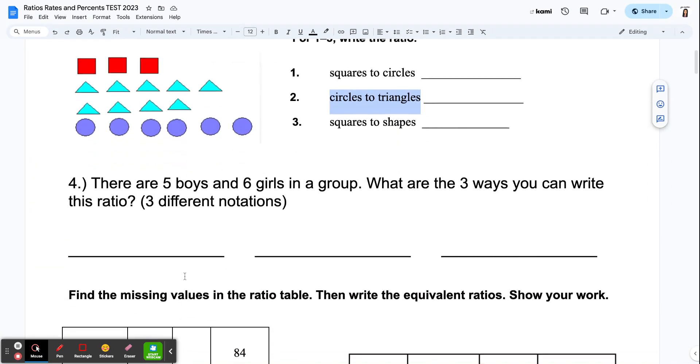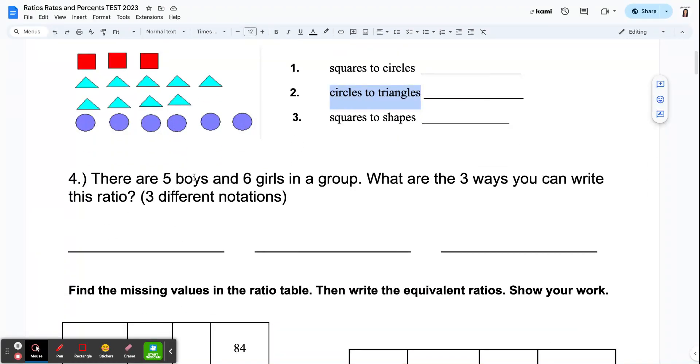For number four, there are five boys and six girls in a group. What are the three ways you can write this ratio? So we have practiced writing ratios using three different notations, or writing them in three different ways. On each of these lines, you are going to write five boys and six girls in three different ways.